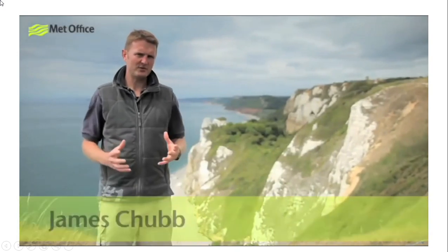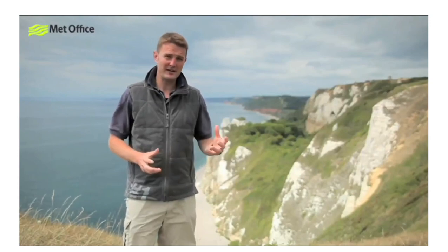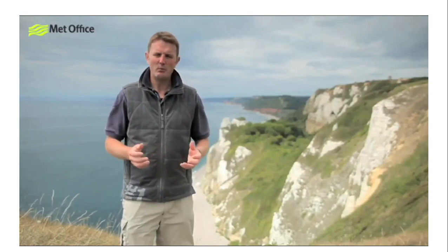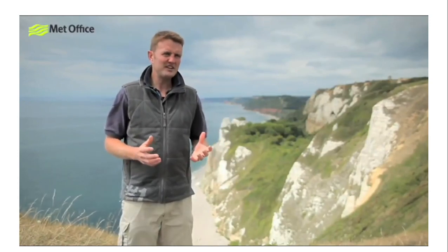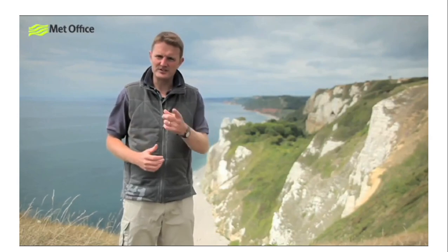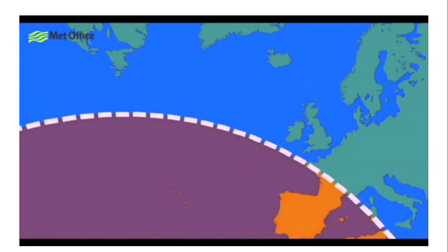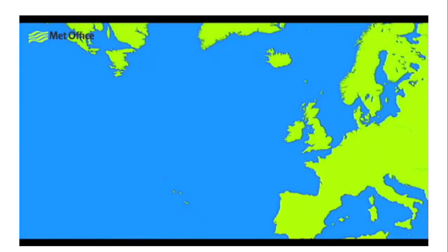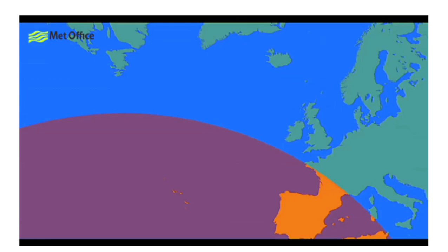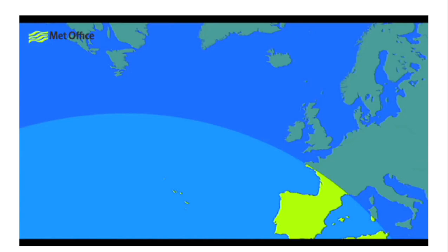You may have heard weather forecasters on television talking about a warm front or a cold front approaching and bringing with it a change in the weather. A weather front is the boundary between two bodies of air with different temperature and humidity. These differences depend on where the air has come from - for example, air over tropical oceans becomes very hot and humid, while air over the arctic becomes very cold and dry.